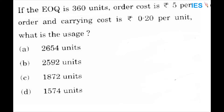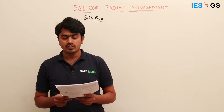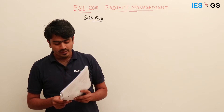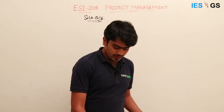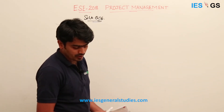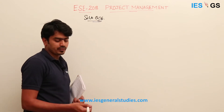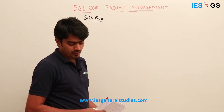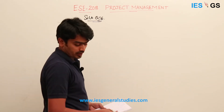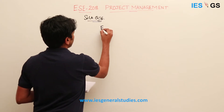The next question is number 56, related to EOQ. If the EOQ is 360 units, the order cost is rupees 5 per order, and the carrying cost is 0.2 rupees per unit, what is the usage? This is a straightforward question applying the EOQ formula to derive the usage value.